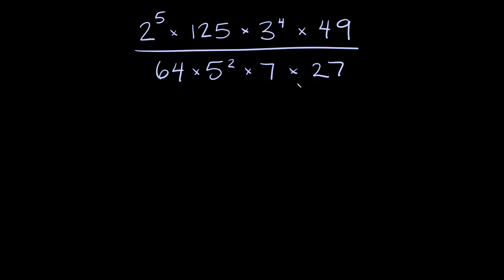The trick to this is rewriting some of these whole numbers as numbers with exponents because if we can do that then we can start canceling some stuff out. Instead of trying to just multiply all this out we can try and simplify some stuff. So let's start with the top.